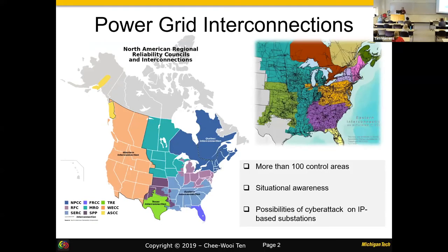This first picture is probably no stranger to you — it's a map of the United States. Texas is by its own, and then there's the Western interconnection and Eastern interconnection. We've been part of the Eastern interconnection, so whatever happens in Florida can propagate all the way up to Michigan. The picture on the top right shows the complexity of the transmission circuit — voltage levels can be up to 765 kV.